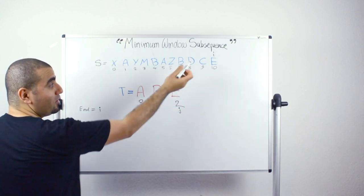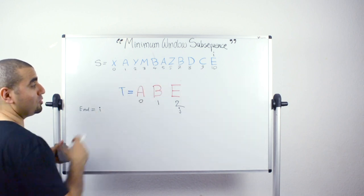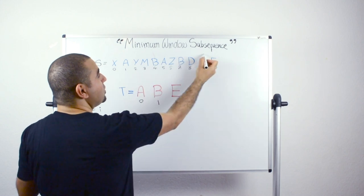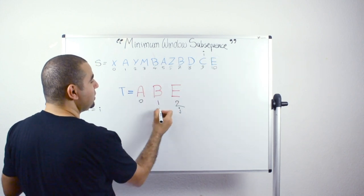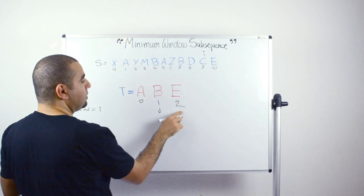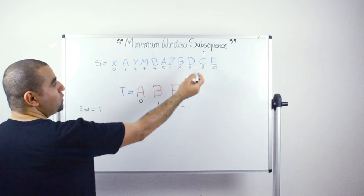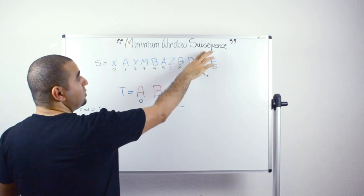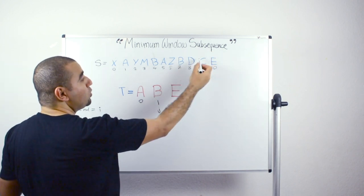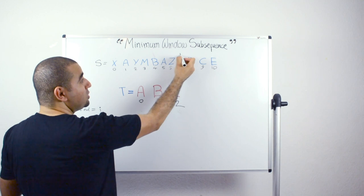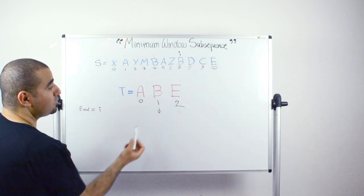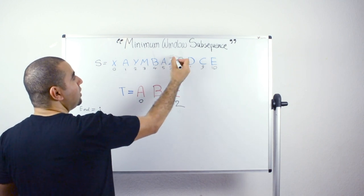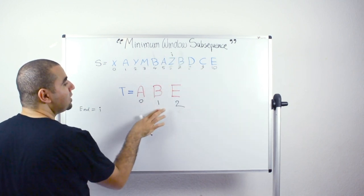Do we have a match between j and i going backward? Yes, both contain 'e'. So i and j move back one step. Is there a match between the character at position i and position j? No. So we keep moving i backward until we reach a match. Yes there is a match, and then it's time to move both i and j backward.